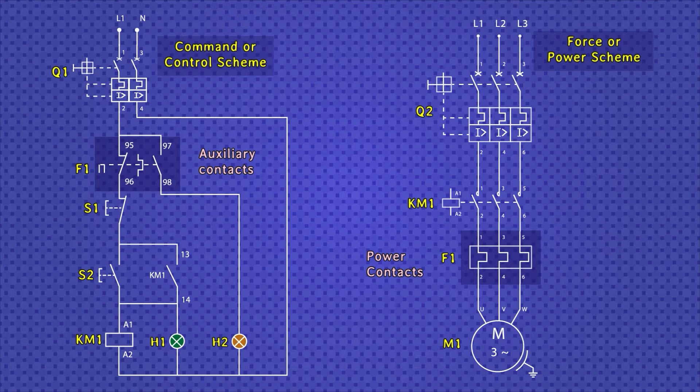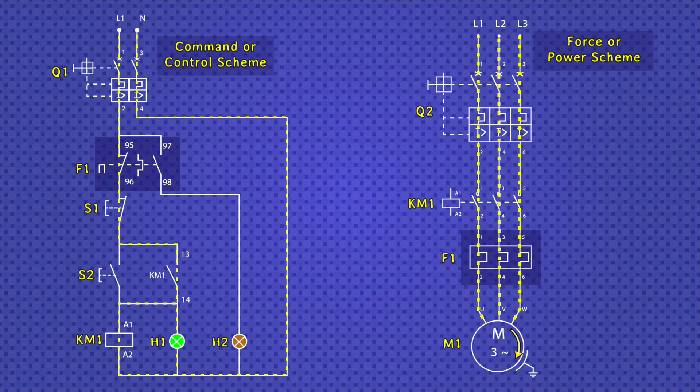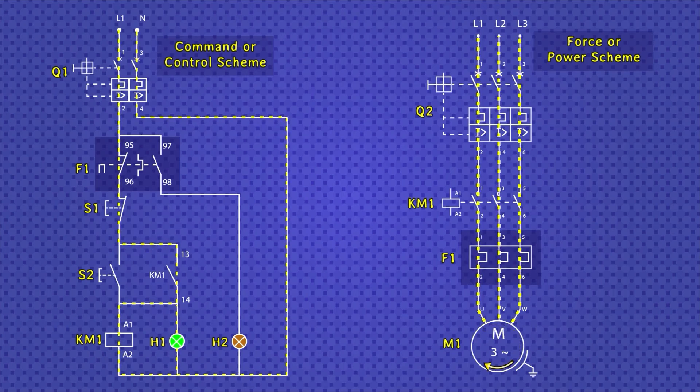The circuit works as follows. When you press the start button, self-retention is immediately generated in the contactor, thus energizing the power lines and allowing the motor to run.